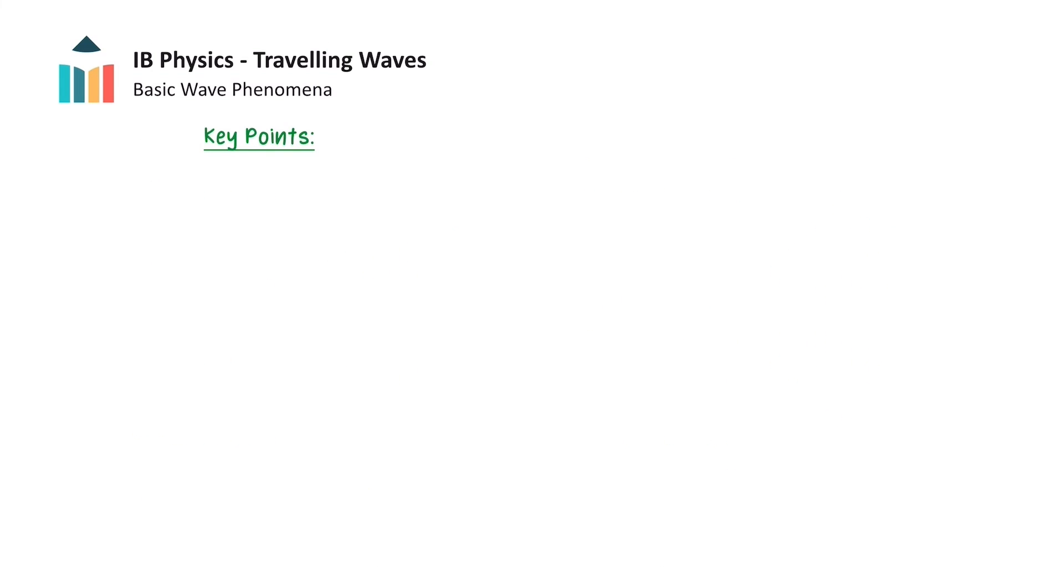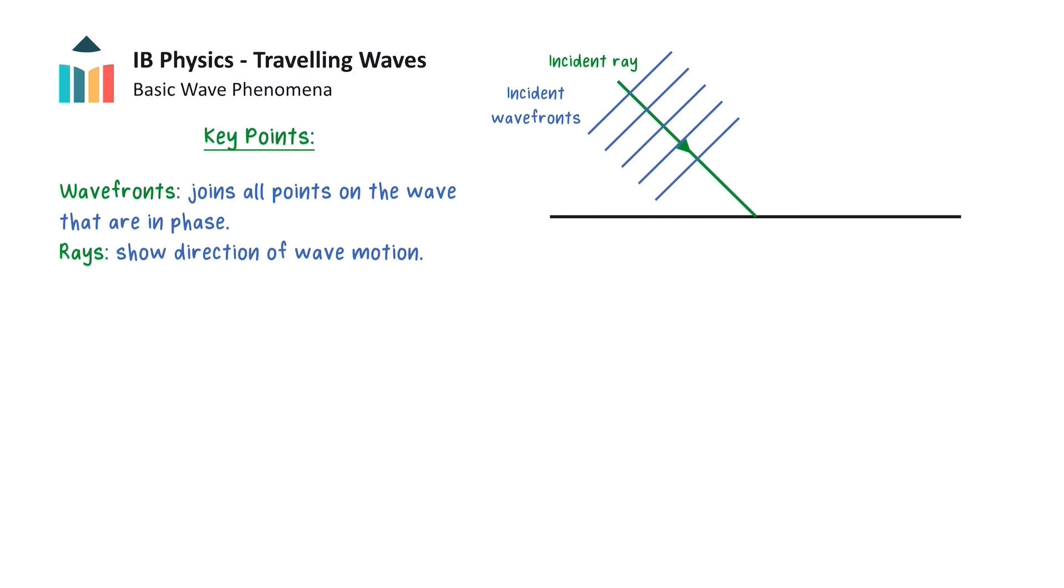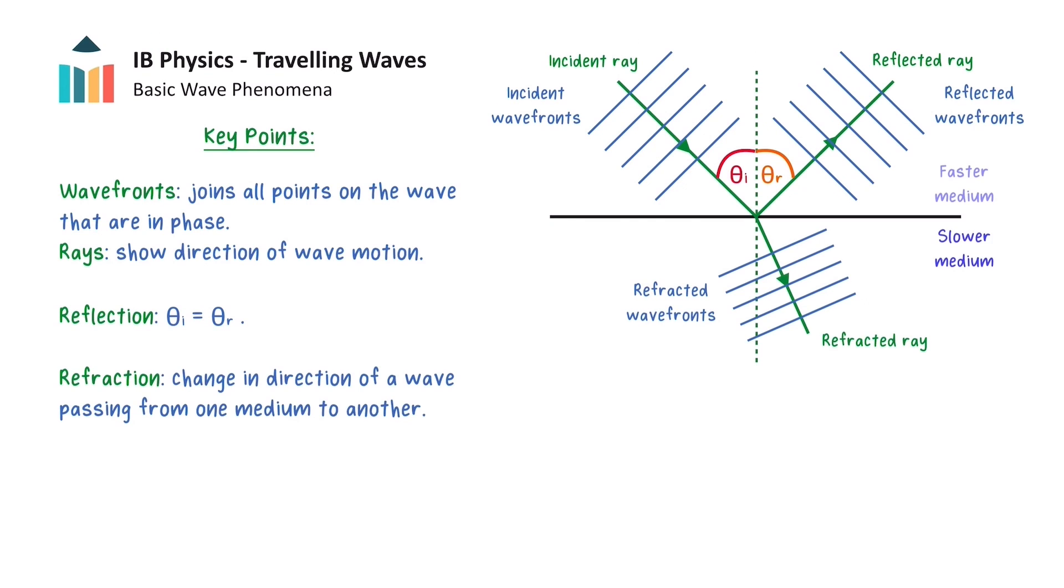We will now provide a final summary of the key understandings from this video. Wavefronts represent all the points on the wave that are in phase, and rays show the wave's direction of travel. Wavefront and ray diagrams can be used to demonstrate various wave phenomena. Waves can be reflected off a reflective surface, where the angle of incidence is equal to the angle of reflection.